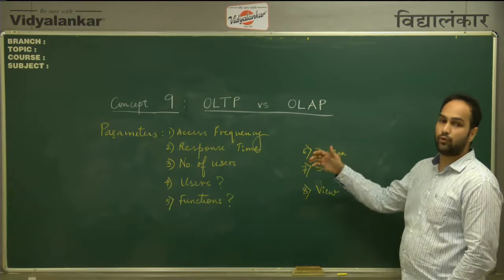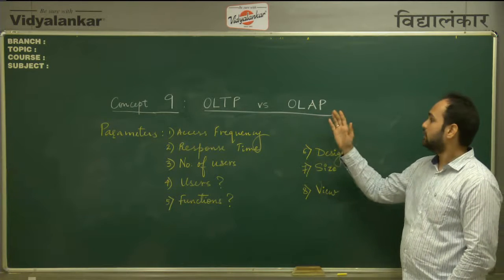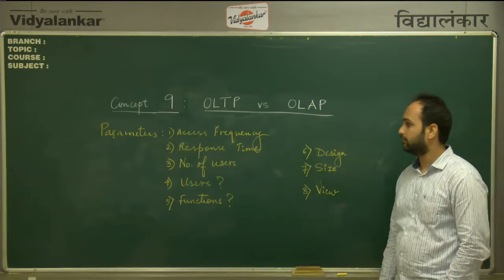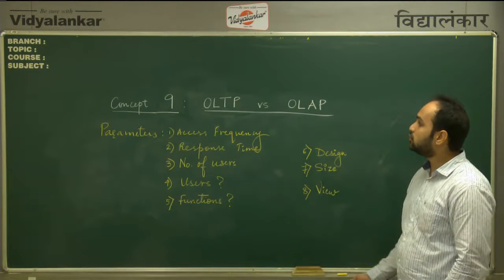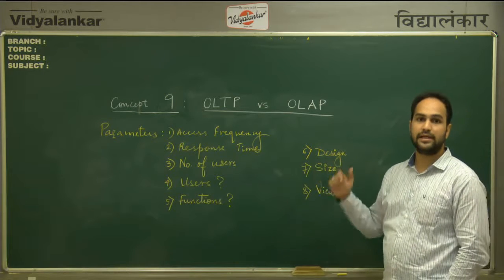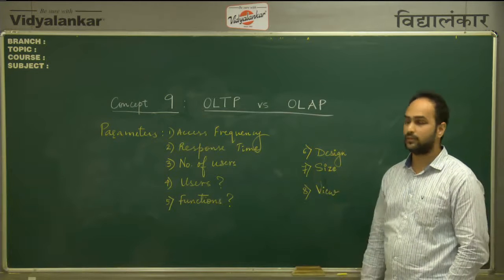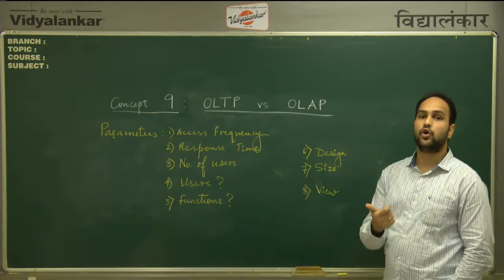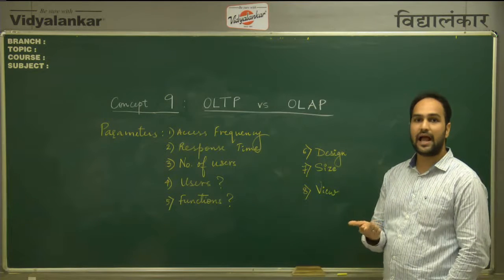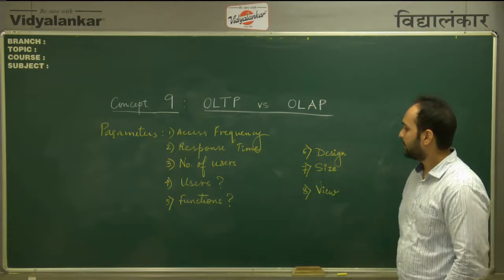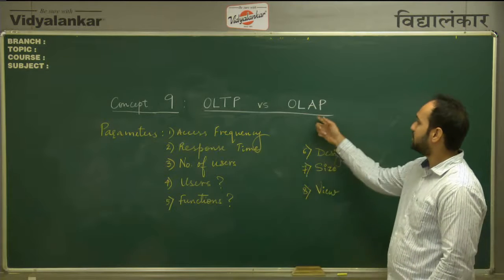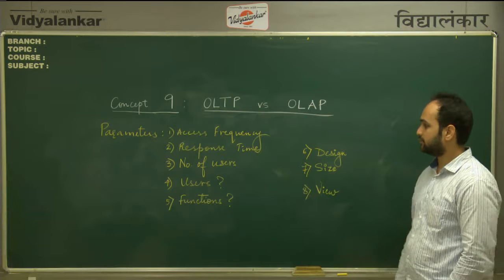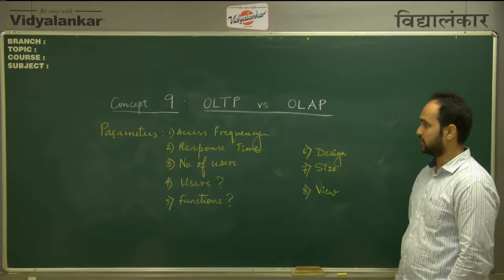The third parameter is number of users. The number of users accessing OLTP systems is high, whereas the number of users accessing OLAP systems is low. The fourth parameter is types of users. Users who access OLTP are clerks, database administrators, and database professionals, whereas users accessing OLAP are executives and business managers.